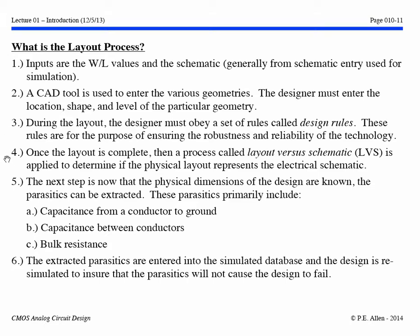Once the layout is complete, the process called layout versus schematic is applied to determine if the physical layout actually represents the electrical schematic. Once that is complete, the next step is to extract the parasitics, knowing the physical dimensions. These parasitics typically include the capacitance from a conductor to ground, capacitance between conductors, and the bulk resistance. Once extracted, they are entered into the simulated database and the design is re-simulated to ensure parasitics will not cause the design to fail.